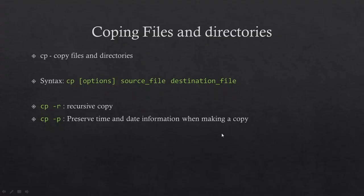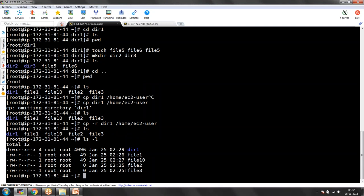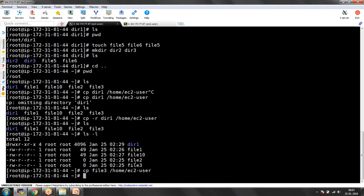Next we have CP minus P — P stands for preserve. It preserves the timestamp. For example if you created a file 10 days before and now you want to copy that file into another location, the destination file will get the latest timestamp by default. If you don't want the latest timestamp and want to keep the old date, you need to use minus P. It is going to preserve the timestamp so the destination timestamp will be the same as the source. We have file3 created on June 25th, around five minutes before. If I copy CP file3 to /home/EC2-user without minus P, the destination file gets the latest timestamp.